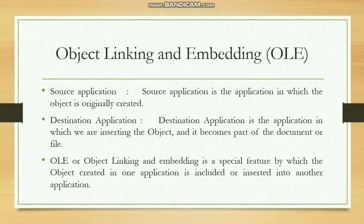In Object Linking and Embedding there are two cases: one is linking an object to the file, and the second is embedding it. There must be two applications — just like the pant piece and the shirt. The first is the source application: the application in which the object is originally created. The second is the destination application: the application in which we are inserting the object and it becomes part of the document or file.